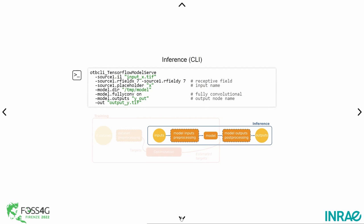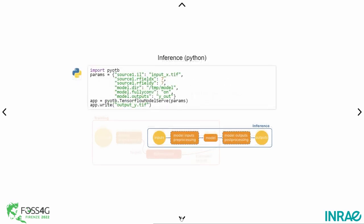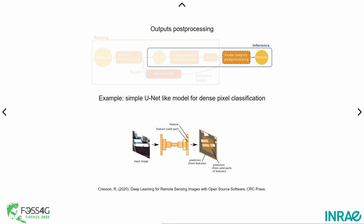Finally, you save the model — just like the scalar product example before — and can use it in an Orfeo Toolbox pipeline from the command line or from Python using PyOTB. I strongly encourage you to see Nicholas's presentation this afternoon. Output post-processing is also a crucial point at operational scale because of blocking artifacts in DeepNet output images. We provide default post-processing functions that crop the output tensor in spatial dimensions to avoid blocking artifacts, allowing fully convolutional models to be applied on arbitrary-sized chunks with smooth output. You can also override this method to implement your own post-processing.